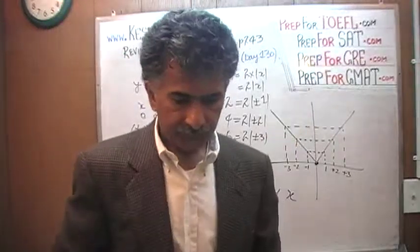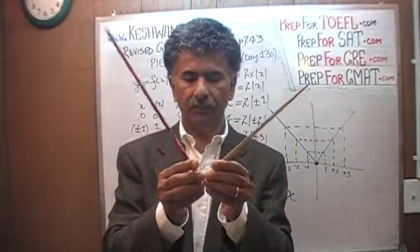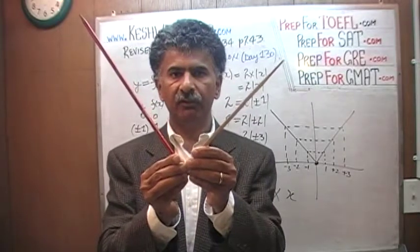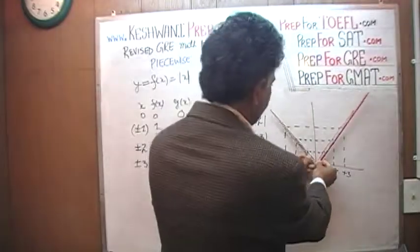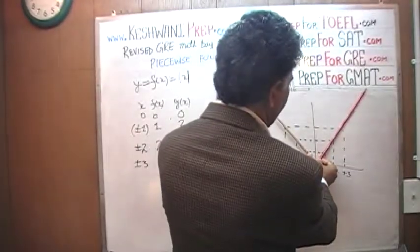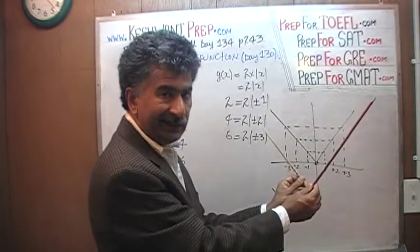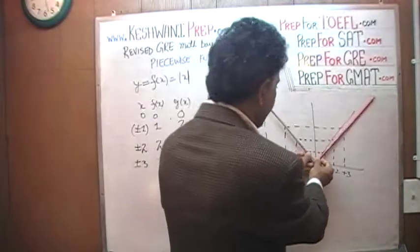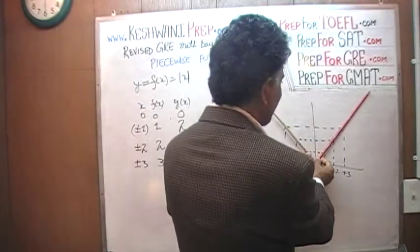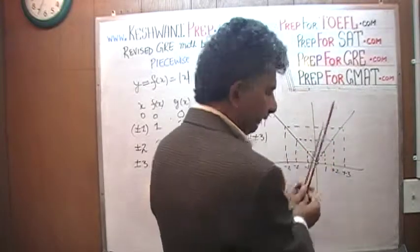For any given value of x, the value of y is twice as much as before. Therefore, the graph gets skinnier. If the graph looks like the original V-shape, as the y values increase for any given x, it is going to become skinnier. Let's draw it and find out.